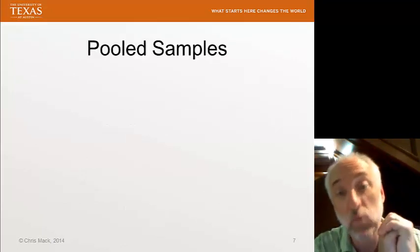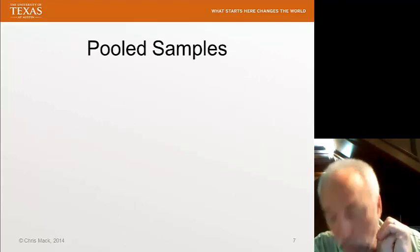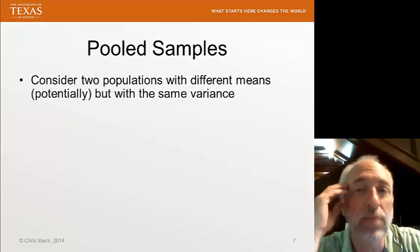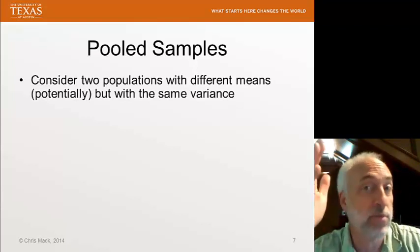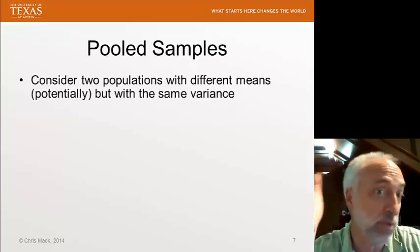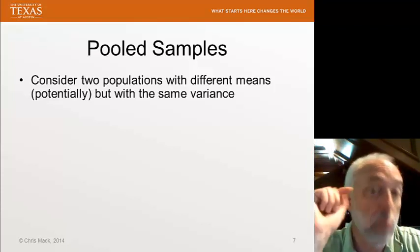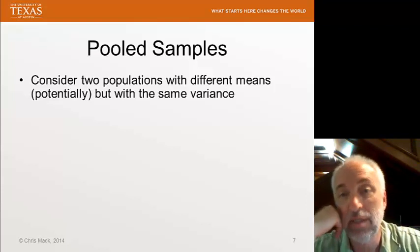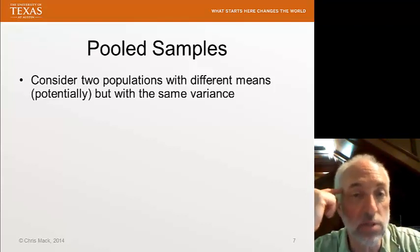Occasionally, we can do something a little bit better by pooling our samples. What if I had two populations that had different means, or at least we're trying to determine whether or not they have different means, but they have the same variance. We somehow know ahead of time that the variance between these two populations is the same.